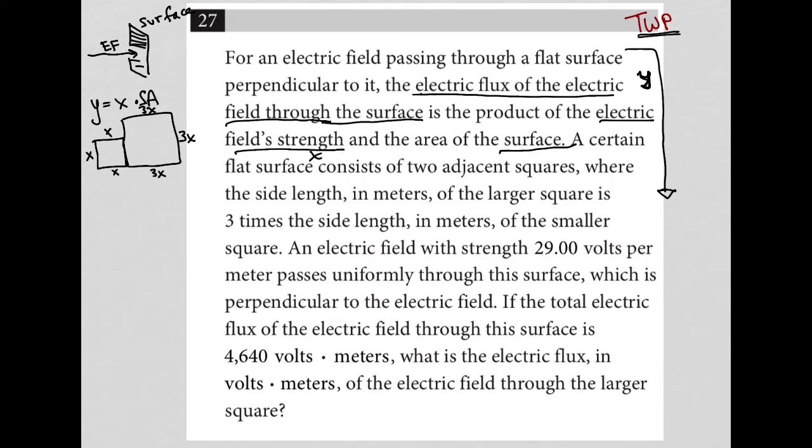Okay. Then it says an electric field with strength 29 volts per meter. So electric field strength, that's X, right? So this is saying if X is equal to 29. Oh, and I have this other X. So maybe I should use a different variable. So let's call these A's. So I don't want to have any confusion. So let's say these are all side length A, and then these are side length 3A. So if X, again, the electric field strength, so if X is 29,